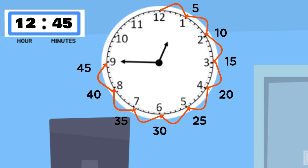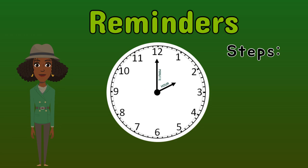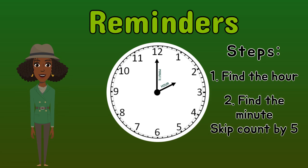Amazing job reading the time on the clock. Before you go, let's talk about what we learned today. There are two hands on an analog clock. The hour hand is the short hand — it tells us the hour. The minute hand is the long hand — it tells us how many minutes have passed after the hour. The first step to tell time is to find the hour. Remember, if the hour hand is between two numbers, the hour is the number that the hour hand just passed. The next step is to find the minute: start at 12 and skip count by fives. Don't forget that when the minute hand is on 12, you say o'clock, and a new hour starts.